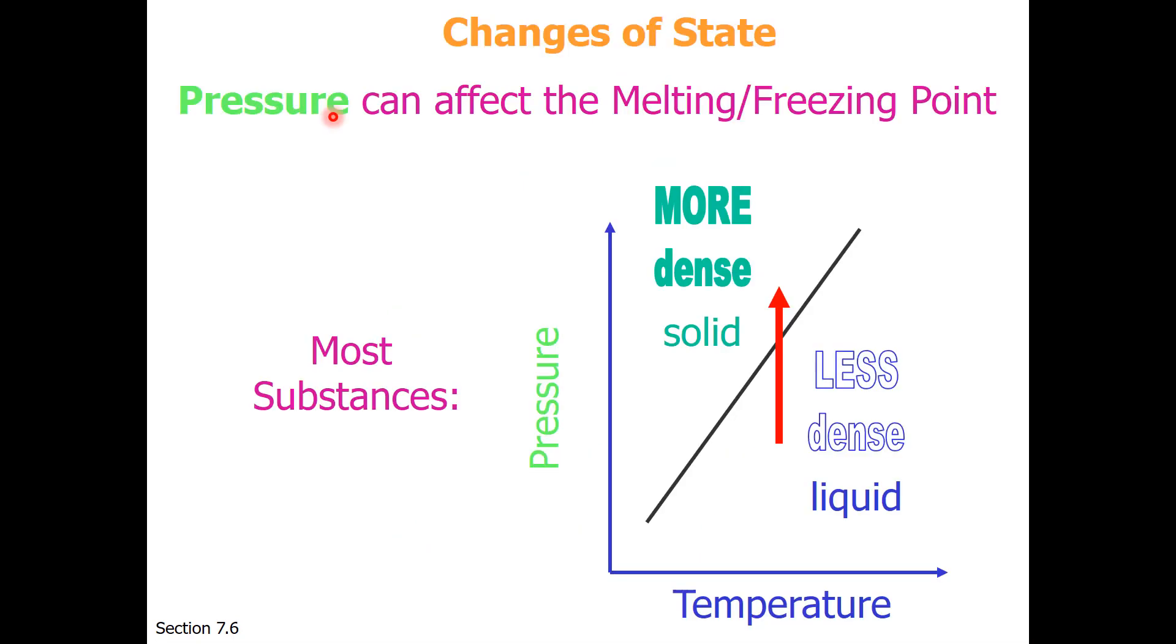Changes in pressure can affect the melting or the freezing point. Most substances have a more dense solid and a less dense liquid. So if one increases the pressure on the liquid, it will turn to a solid. So typically this line for melting and freezing equilibrium is canted to the right.